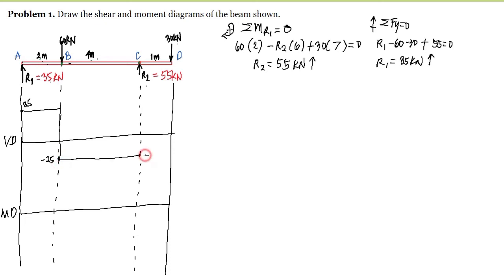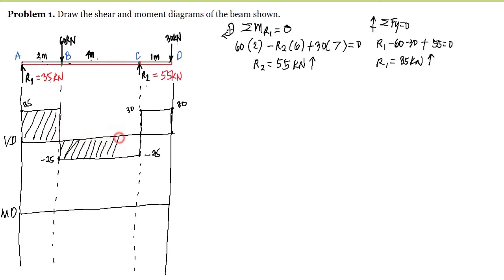There is no load between points C and D, so the shear remains constant there. We still have negative 25, and the 30 kN downward load at D will close our shear diagram. This area method is easy compared to the shear and moment function approach, though there are times when the shear and moment function is easier, especially when the curve is of a higher degree.